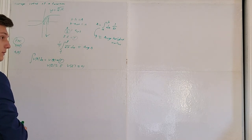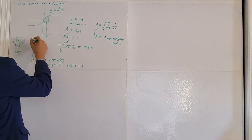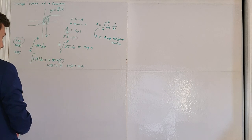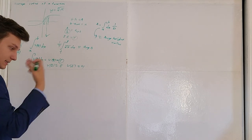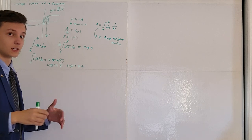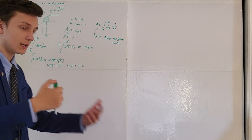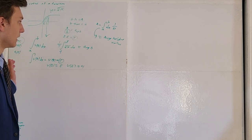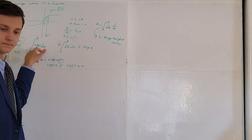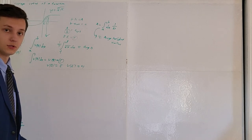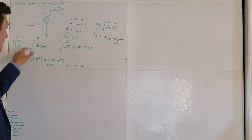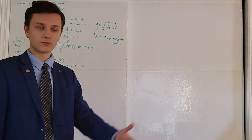Oftentimes they'll ask you to compute the definite integral of the velocity function v(x) dx. You need to know conceptually that the definite integral of the velocity function is an accumulation of change — an accumulation of velocity. It tells you the total distance traveled at that velocity, exactly how far you traveled between time a and time b.